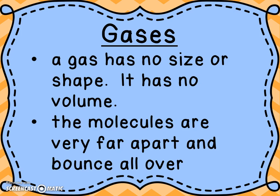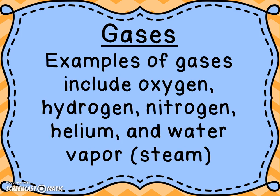And gases. A gas has no size or shape — it has no definite volume at all. Basically, it just takes the shape and size of its container. The molecules in a gas are very far apart and they bounce all over the place. Some examples of gases include oxygen, hydrogen, nitrogen, helium — that's the gas they put in balloons, and if you breathe it in, it makes you talk funny — and water vapor.